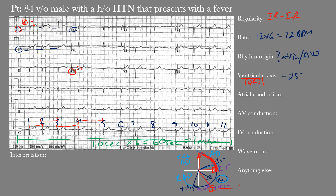Lead II sits at positive 60 degrees, and its perpendicular plane passes through negative 30 degrees. If lead II is mostly positive, the axis is in the more normal range; if negative in lead II, it falls in the pathological region. In this case, the QRS complexes in lead II actually appear isoelectric — the positive and negative portions are roughly equal — meaning our axis lies right along the negative 30-degree boundary. The axis was confirmed at negative 25 degrees, still within normal limits but in the leftward portion.